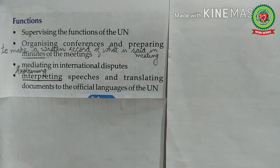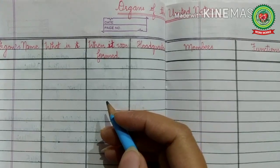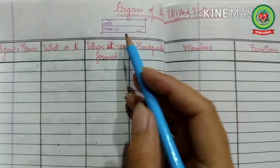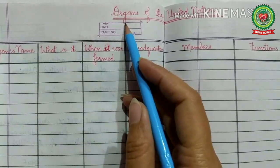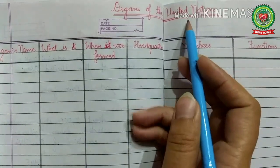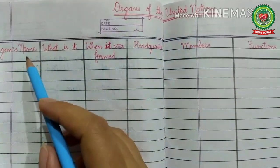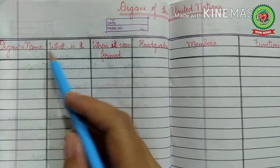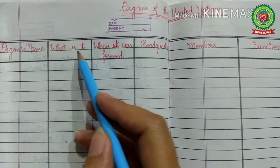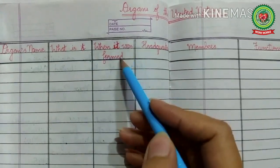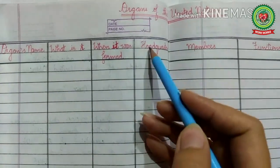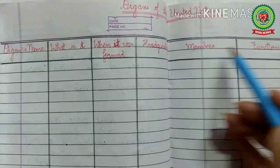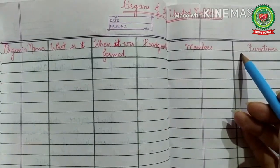I hope the first three organs of the United Nations are clear to you all. Your today's homework is to make a chart on the organs of the United Nations, in which you have to mention the organ's name, what it is, when it was formed, headquarters, and members.